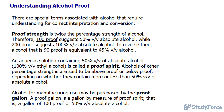First of all, proof strength is twice the percentage strength of alcohol. So say you have a solution that is 50% volume per volume alcohol — that would be considered 100 proof because it's double your percentage of alcohol. Whereas if you were to say this solution is 200 proof, that means the solution is completely alcohol. In reverse then, you can say that alcohol that is 90 proof is equal to 45% volume per volume alcohol.